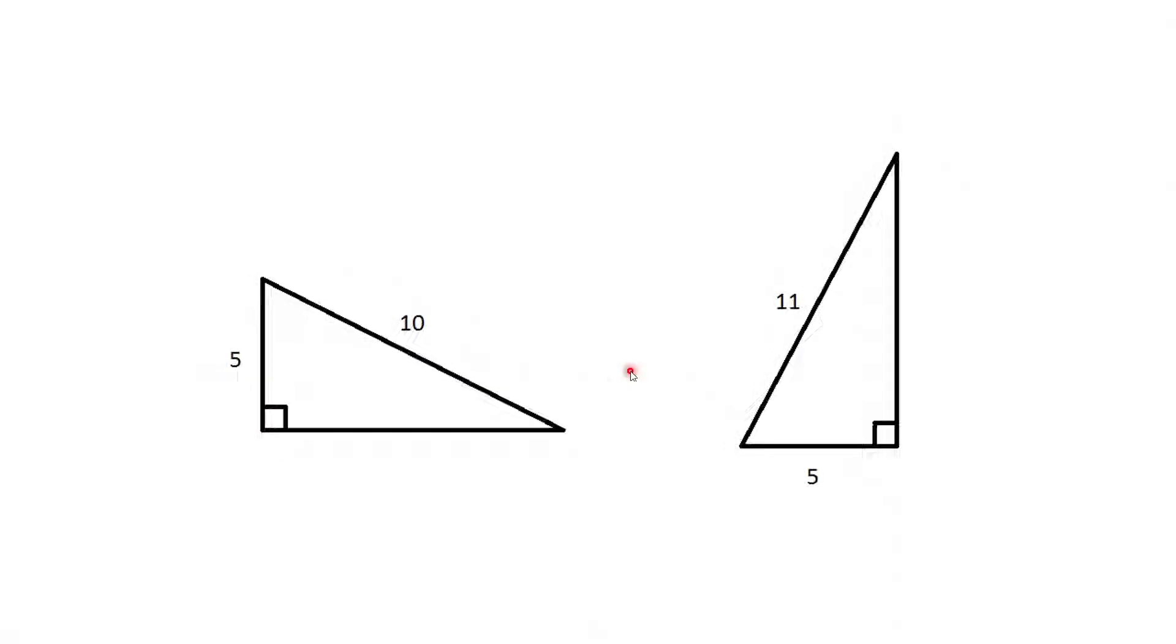And the last one of those. These would definitely not be congruent, because there's a right angle in each, and the hypotenuse is different. So that means that they are different right-angled triangles.